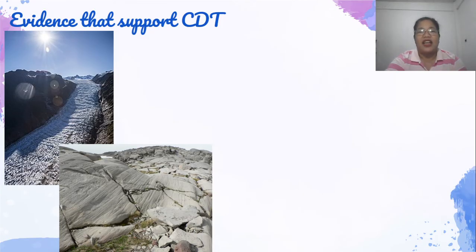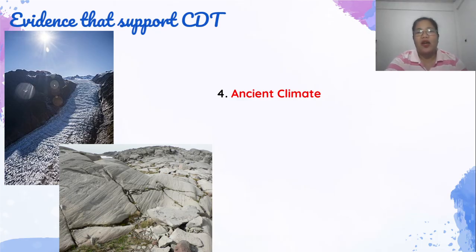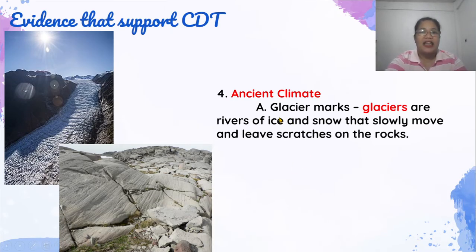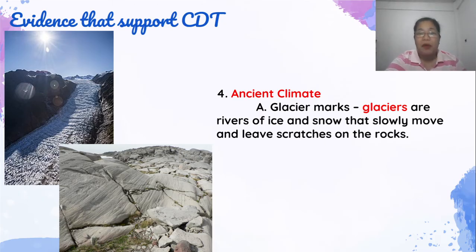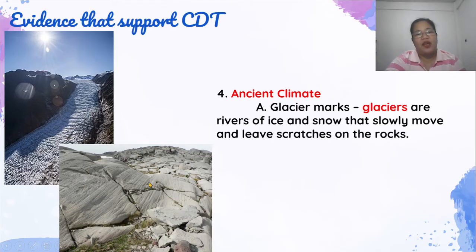Narito pang isang ebidensya ng Continental Drift Theory — ang Ancient Climate or Paleoclimate. Ito ang pag-aaral ng klima noong sinaunang panahon, kahit bago pa nagkaroon ng tao. Pinag-aralan nila ang mga Glacier Marks. Ang glacier ay isang uri ng ilog na gawa sa yelo at mga bato at snow. Ang mga ilog na ito ay umaagos, at dahil mabigat ang yelo, pag agos nito nagagasgas niya o nascratch niya ang mga bato sa ilalim. Ang tawag dito ay Glacier Marks or Striations. Narito ang halimbawa o picture ng isang glacier — gawa siya sa yelo at ito ay gumagalaw, at nagagasgas niya ang mga bato kaya nagkakaroon ng marka.